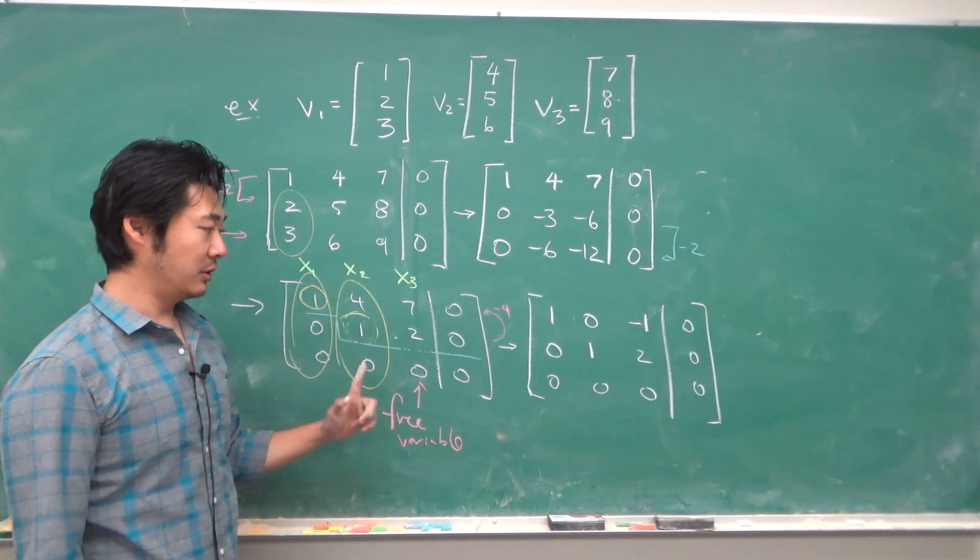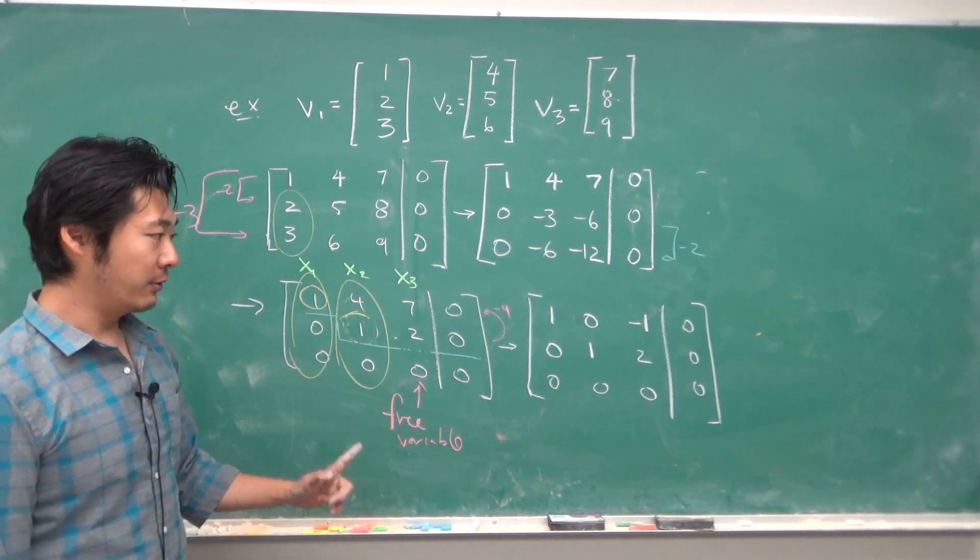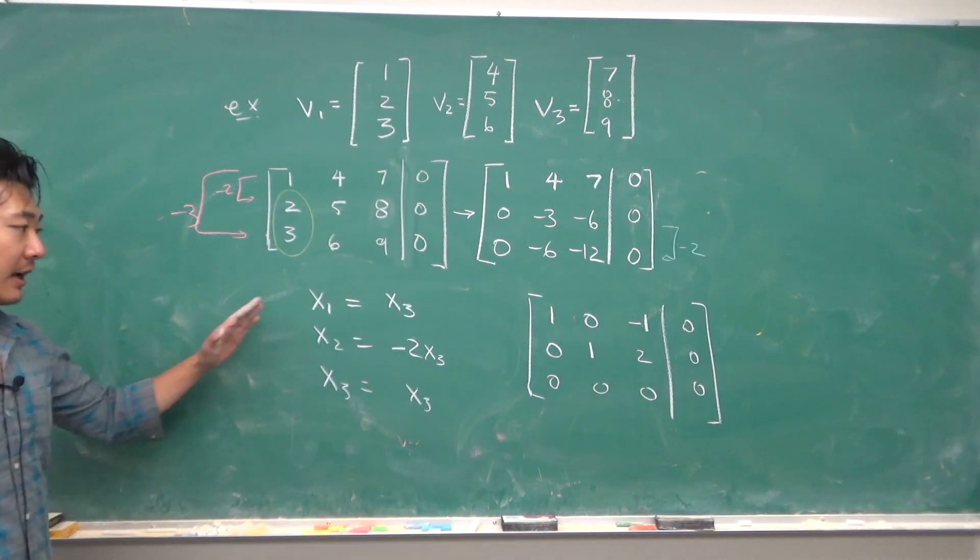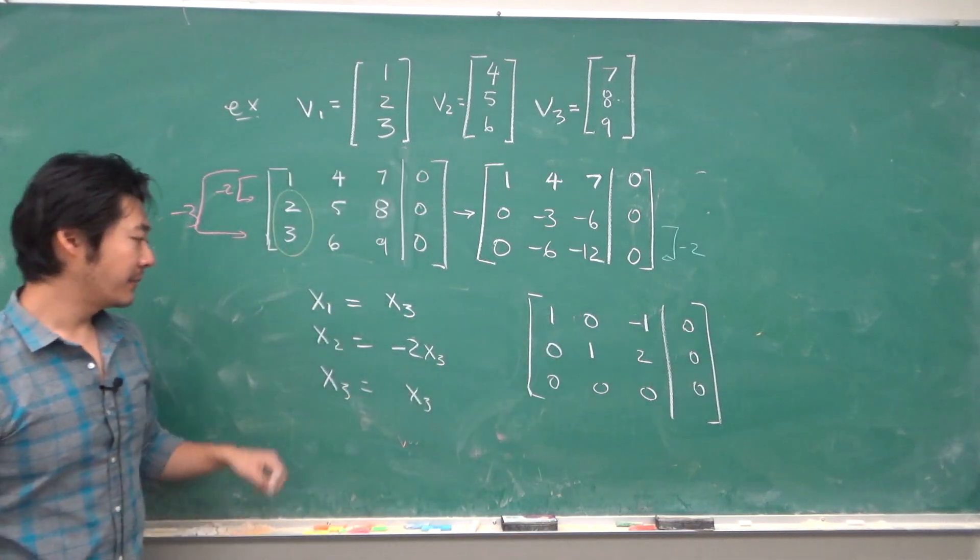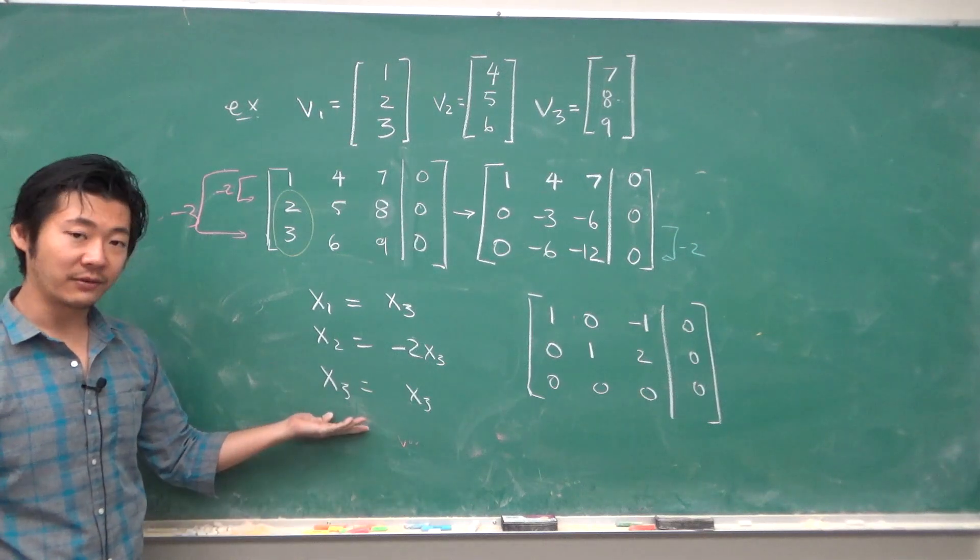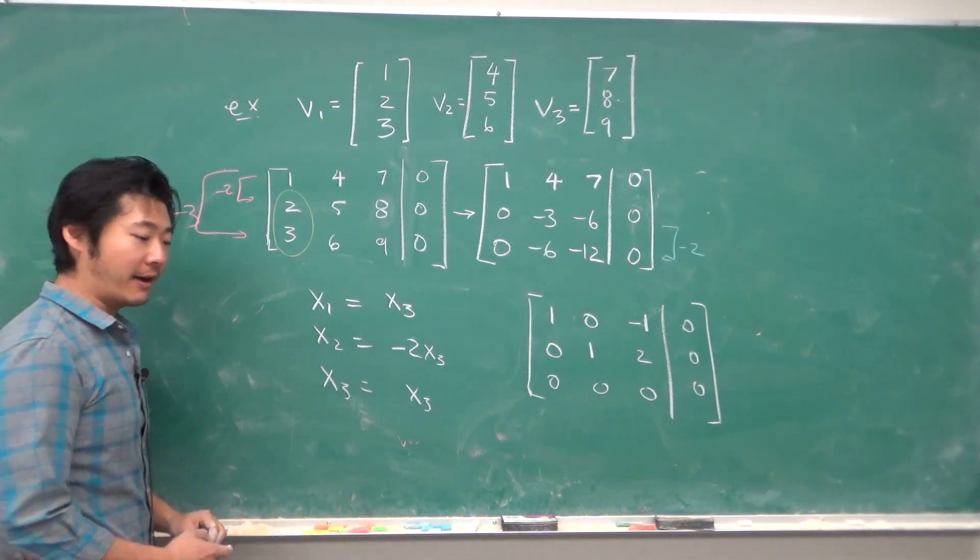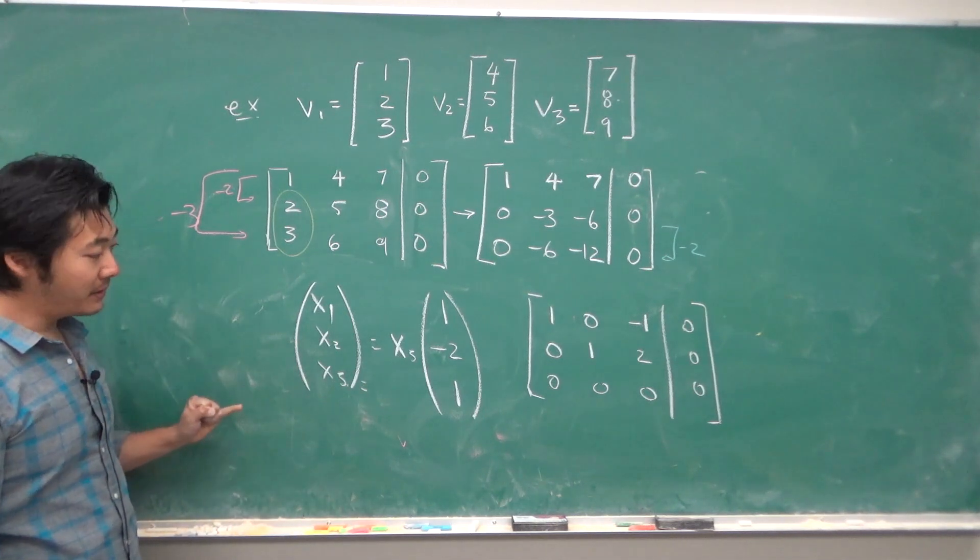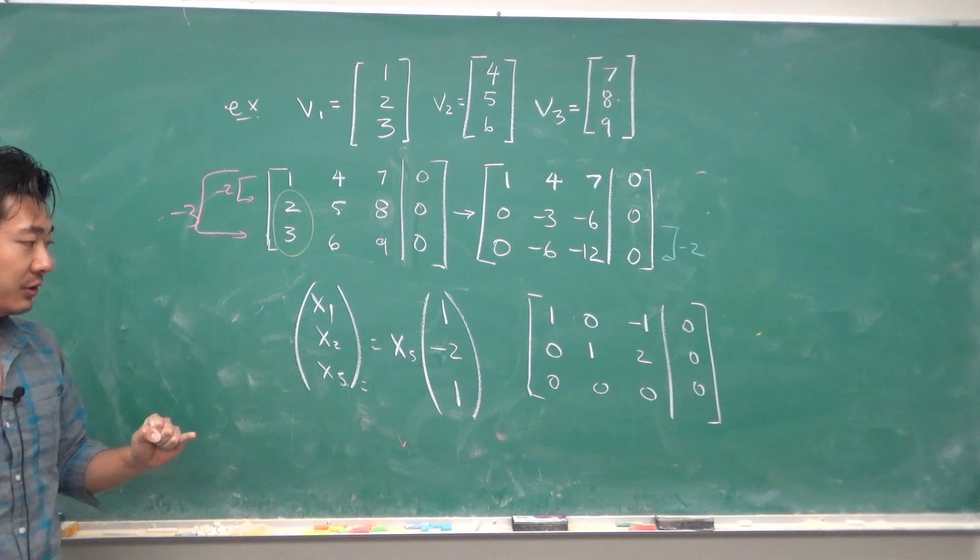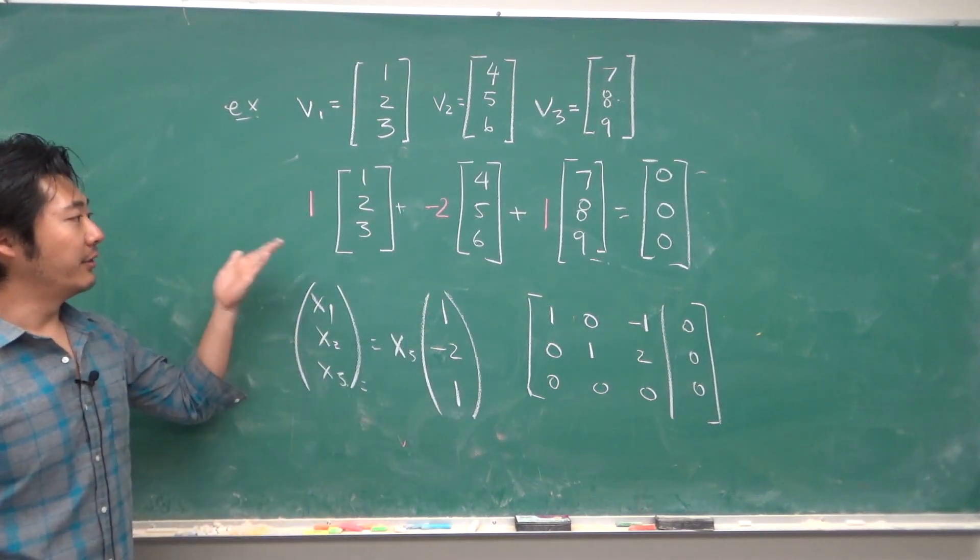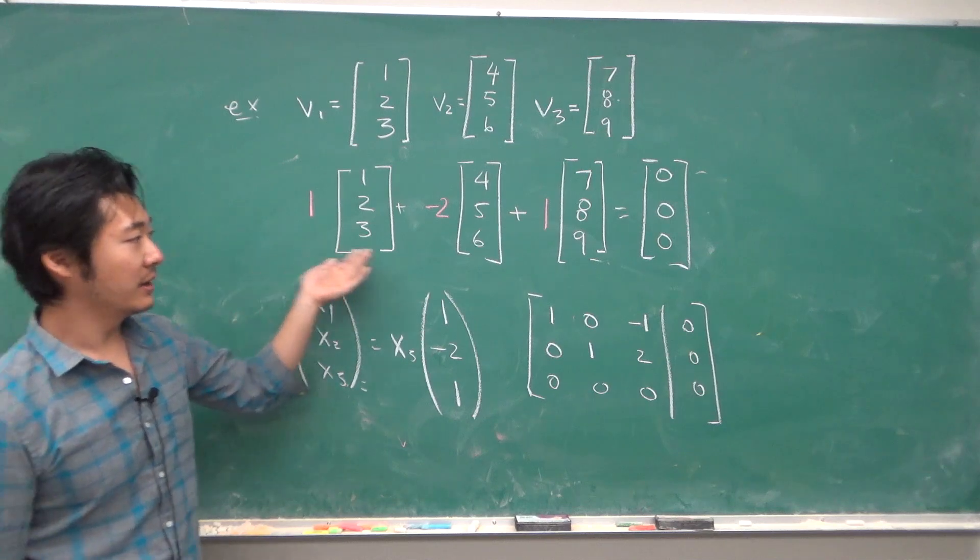This is in row reduced echelon form. If we write out the solution, we have that x1 equals x3, x2 equals minus 2x3, and x3 is x3 because it's the free variable. In vector form we have something like this. So setting x3 to be 1 will give us the solution 1, -2, 1, so this linear combination will make this equal to 0.